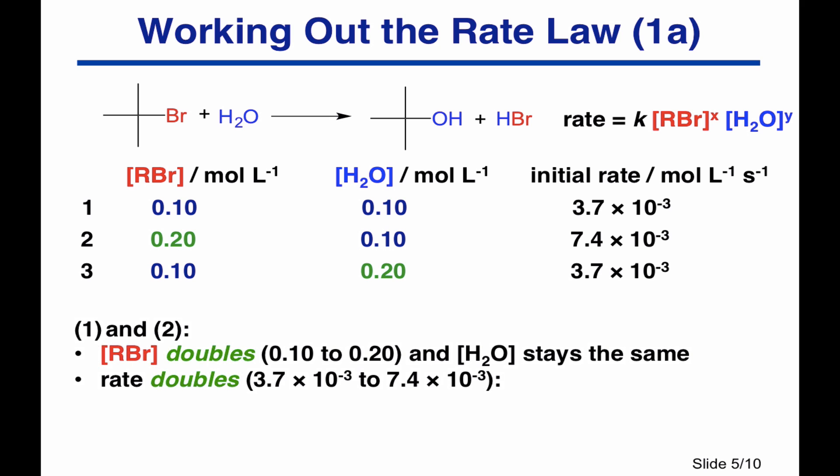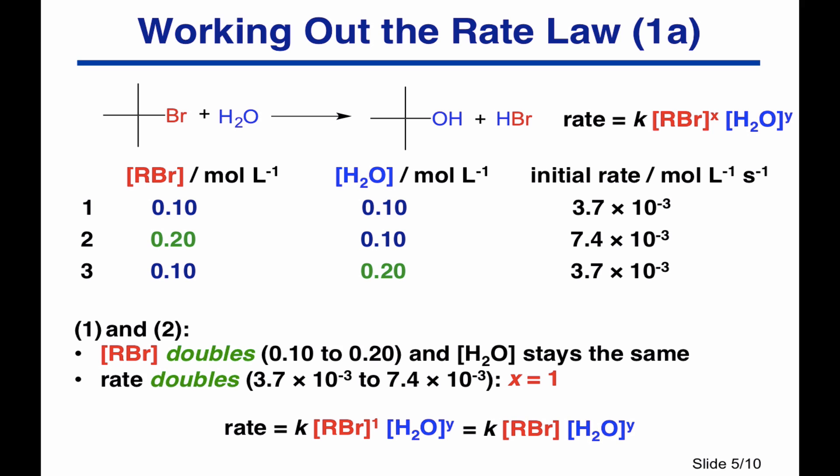Looking at experiments one and two: we doubled the concentration of the alkyl bromide from 0.1 to 0.2 and kept the water the same. Any change in rate was purely down to doubling that alkyl bromide concentration. We doubled the alkyl bromide concentration and the rate doubled — from 3.7 × 10⁻³ to 7.4 × 10⁻³. So X equals 1: a first order reaction, and we have the concentration of alkyl bromide to the power of 1.